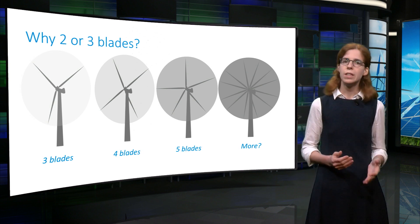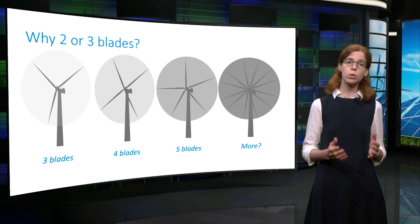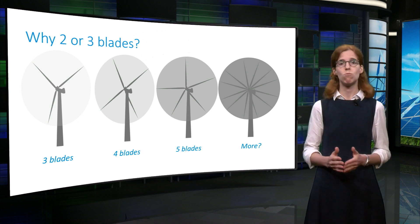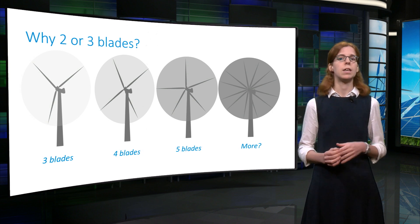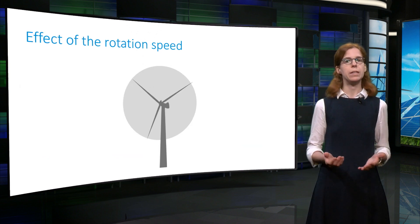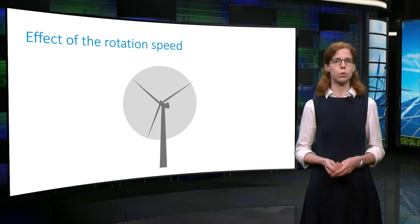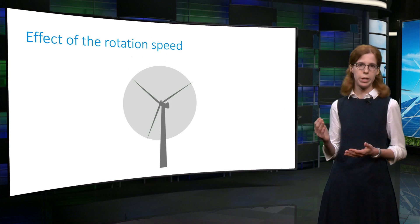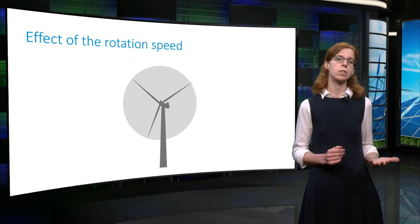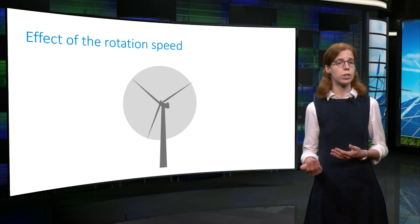In the limit of an infinite number of blades, the rotor would be a solid disk with no air going through. Similarly, there is a limit to the rotational speed of the rotor. For a given number of blades, for example three, the higher the rotational speed, the higher the blockage of the flow.